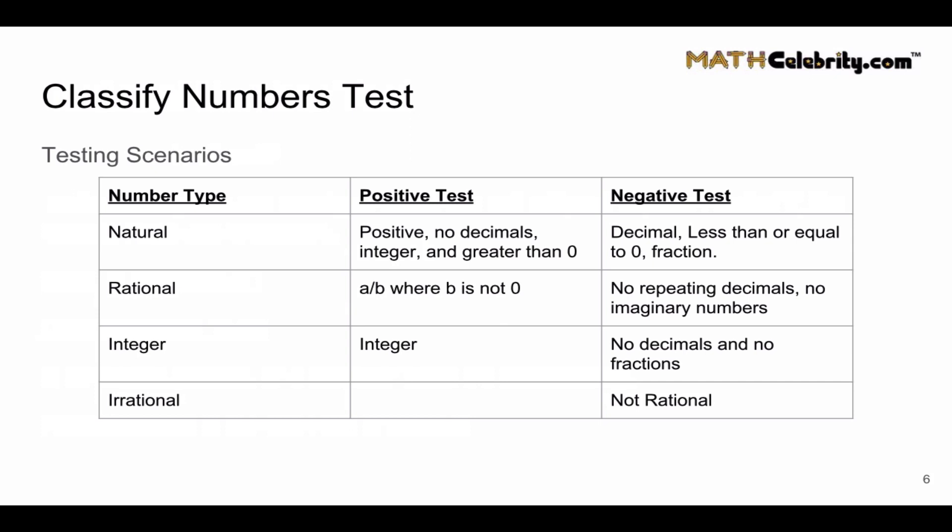I put together this little grid for you. These are testing scenarios and I've listed both the positive tests and the negative tests, because once again, everybody's different. You could use these tests which I've just summarized in the grid from our previous four slides on how to test for or against a number classification type.